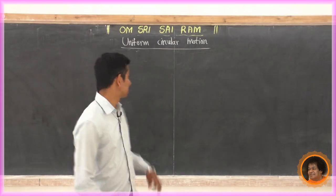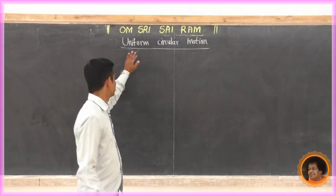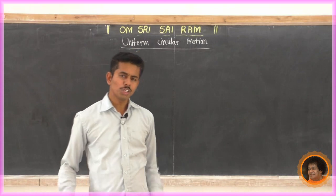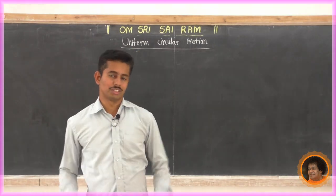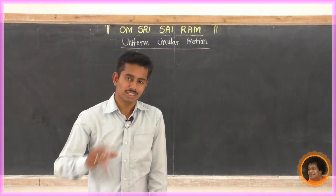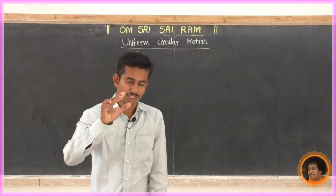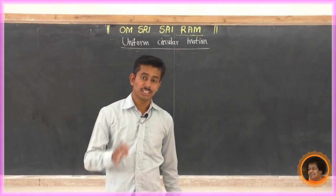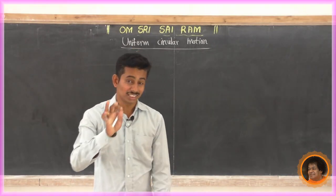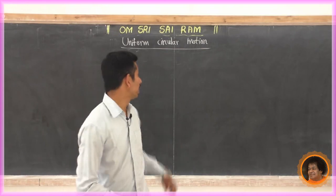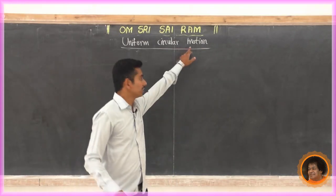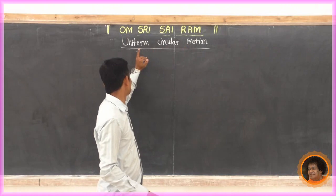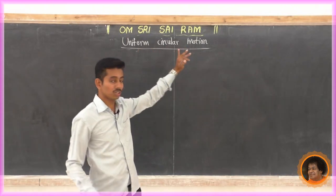The last topic of this chapter is Uniform Circular Motion. What do you mean by motion? When we say the object is moving — if the position of the object changes with respect to time, then we say that object is in motion. So, Uniform Circular Motion.